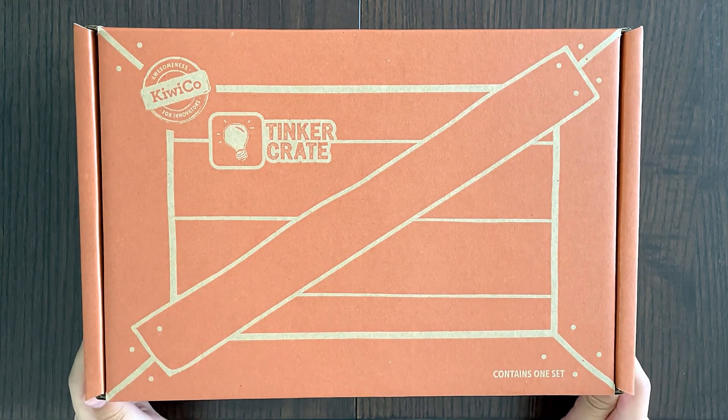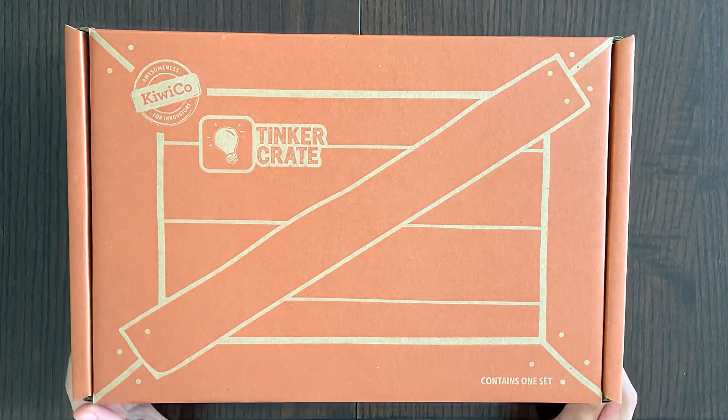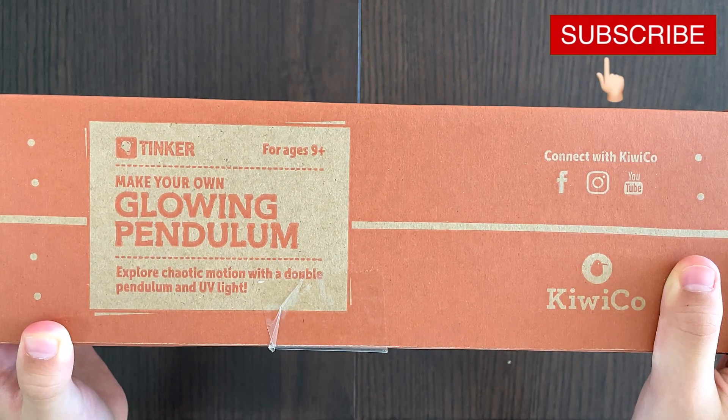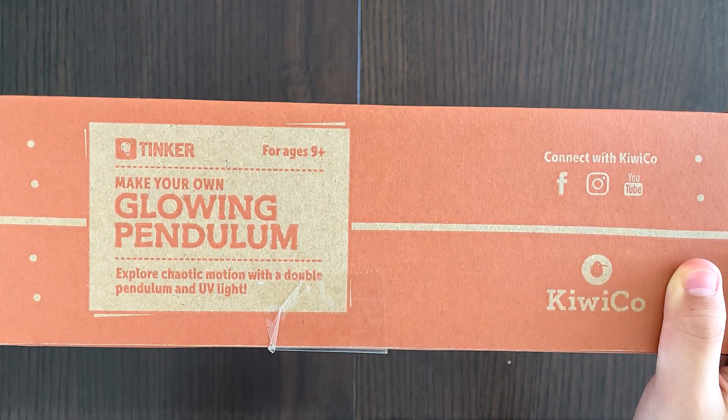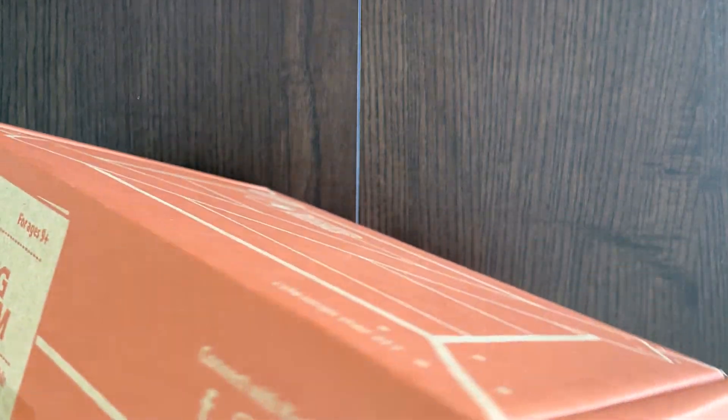Hello Tiny Reviewer friends. Today I'll be reviewing Make Your Own Glowing Pendulum. Explore chaotic motion with a double pendulum and UV light. UV stands for ultraviolet, just to let you know for your information.